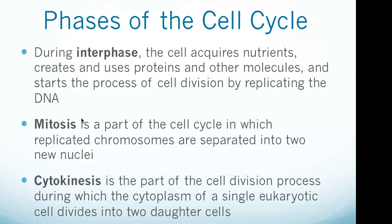Mitosis is the part of the cell cycle in which replicated chromosomes are separated into two new nuclei. Cell division gives rise to genetically identical cells in which the total number of chromosomes is maintained. Mitosis is preceded by the S stage of interphase and is often followed by telophase and cytokinesis, which divides the cytoplasm, organelles, and cell membrane into two new cells. Cytokinesis is the part of cell division during which the cytoplasm of a single eukaryotic cell divides into two daughter cells, beginning during or after the late stages of nuclear division in mitosis and meiosis.